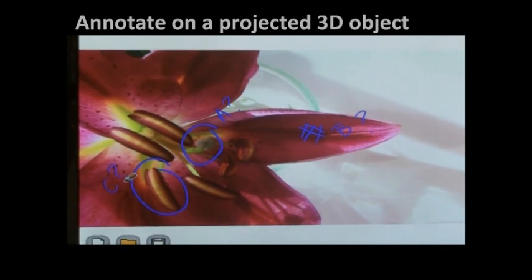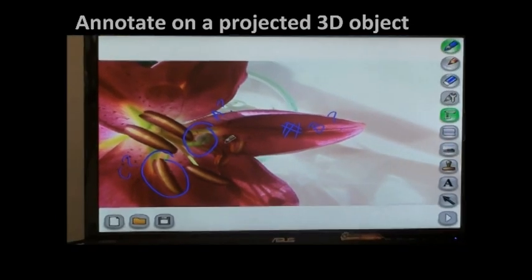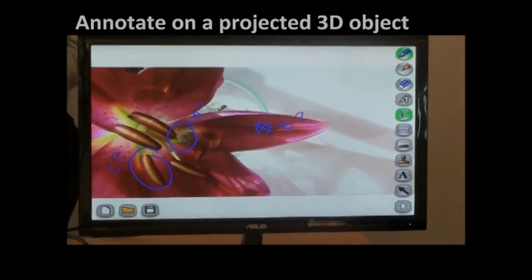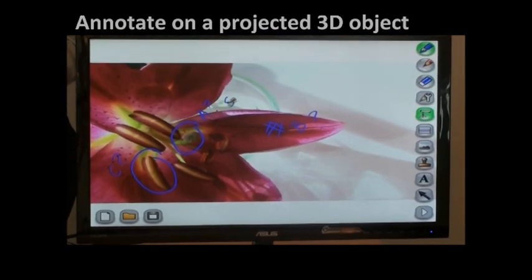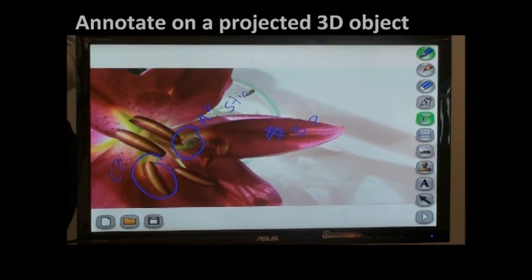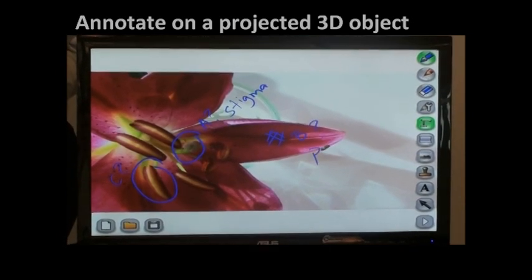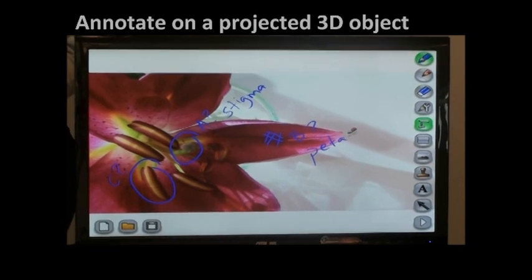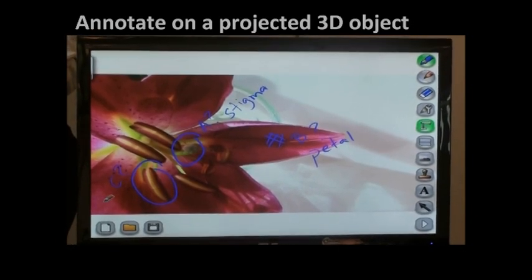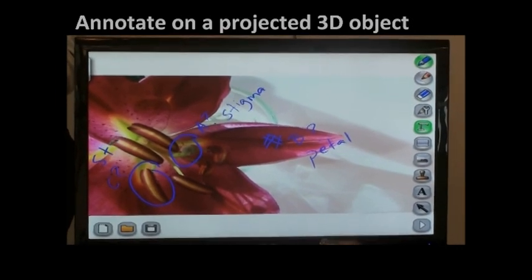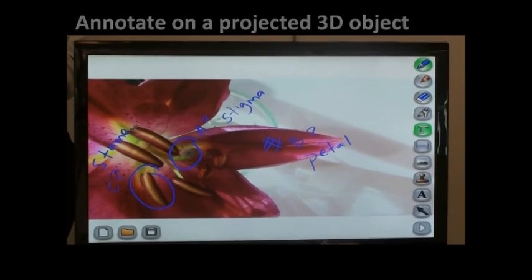And I can ask my students to name each part of the flower. So let's say the answers were A is stigma, B is petal, and C was stamen. Let's write it in here.